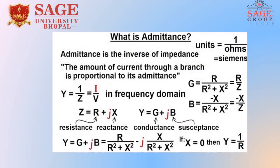What is admittance? Admittance is the inverse of impedance. The amount of current through a branch is proportional to its admittance. Some formulas related to admittance are shown here, and its unit is 1 upon Ohm, which is siemens.